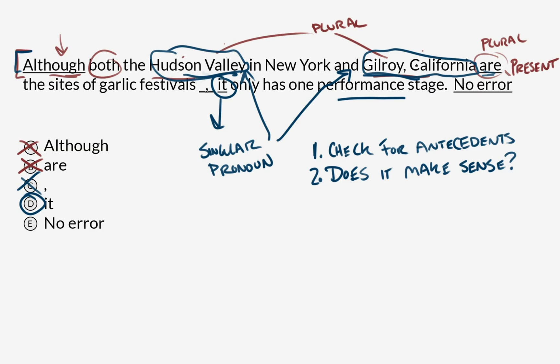That means either these are wrong or 'it' is wrong. But Hudson Valley and Gilroy, California aren't underlined—they're not options. They're baked into the sentence. A quick check any time you have an underlined pronoun will tell you whether there's an error.